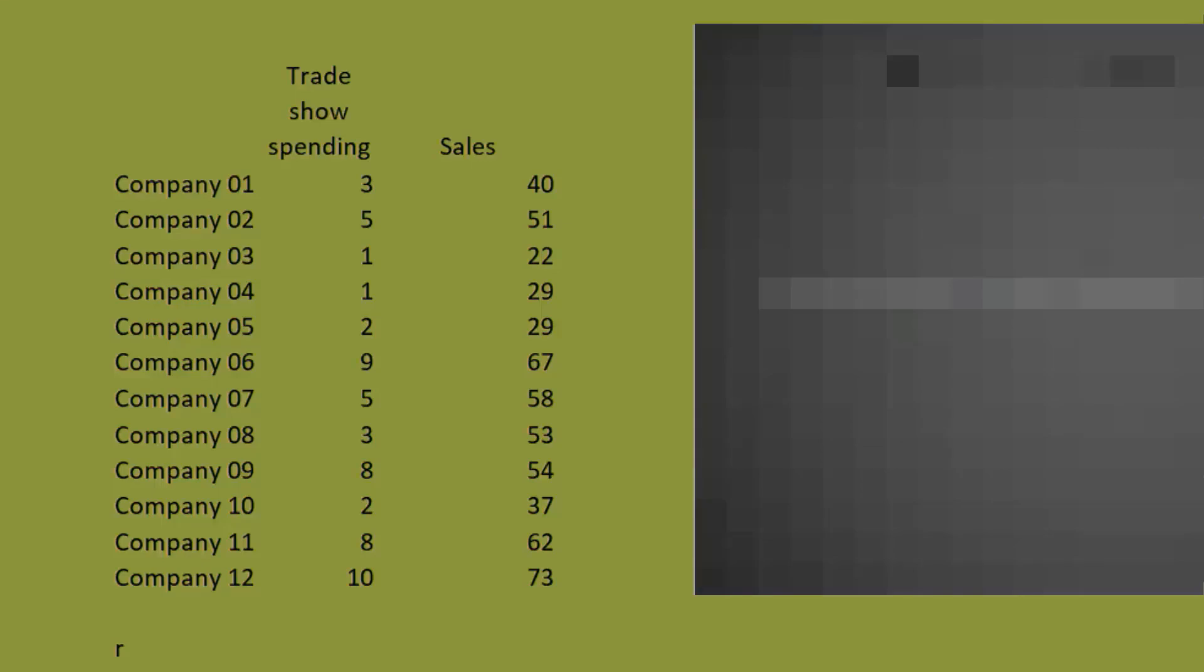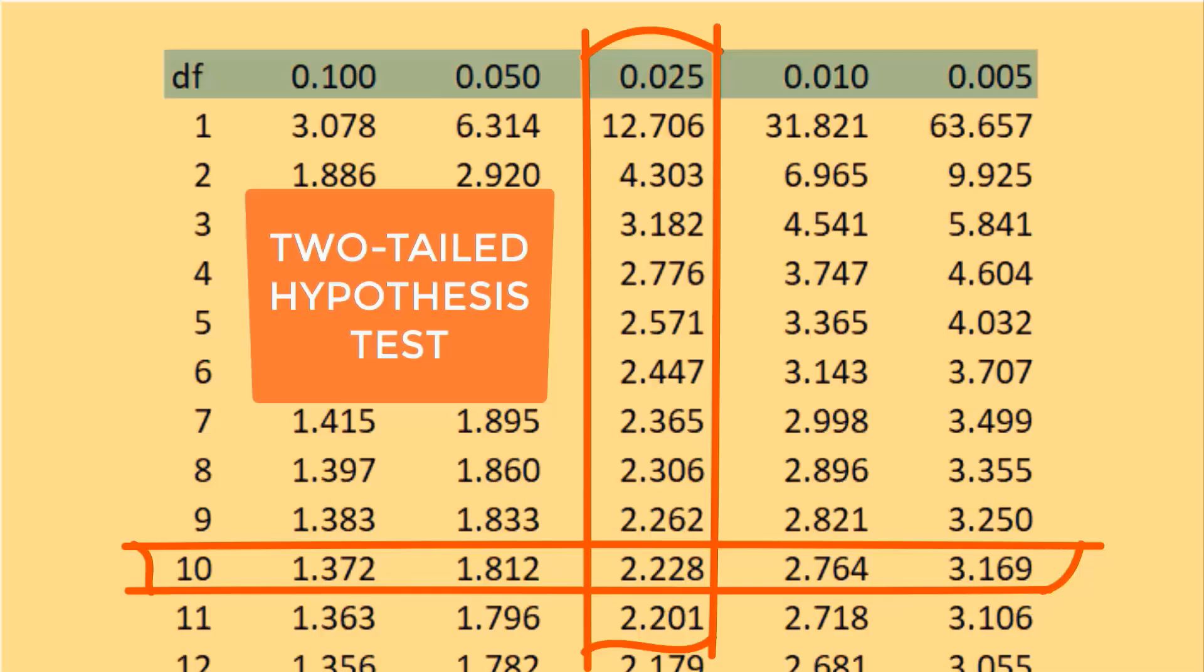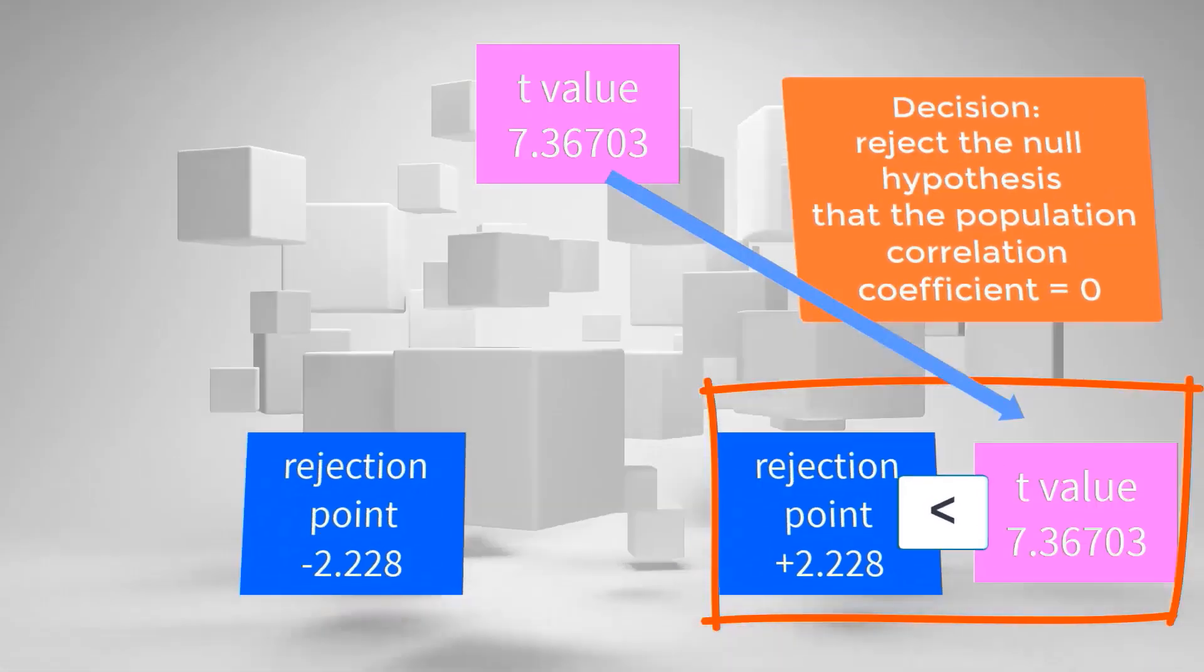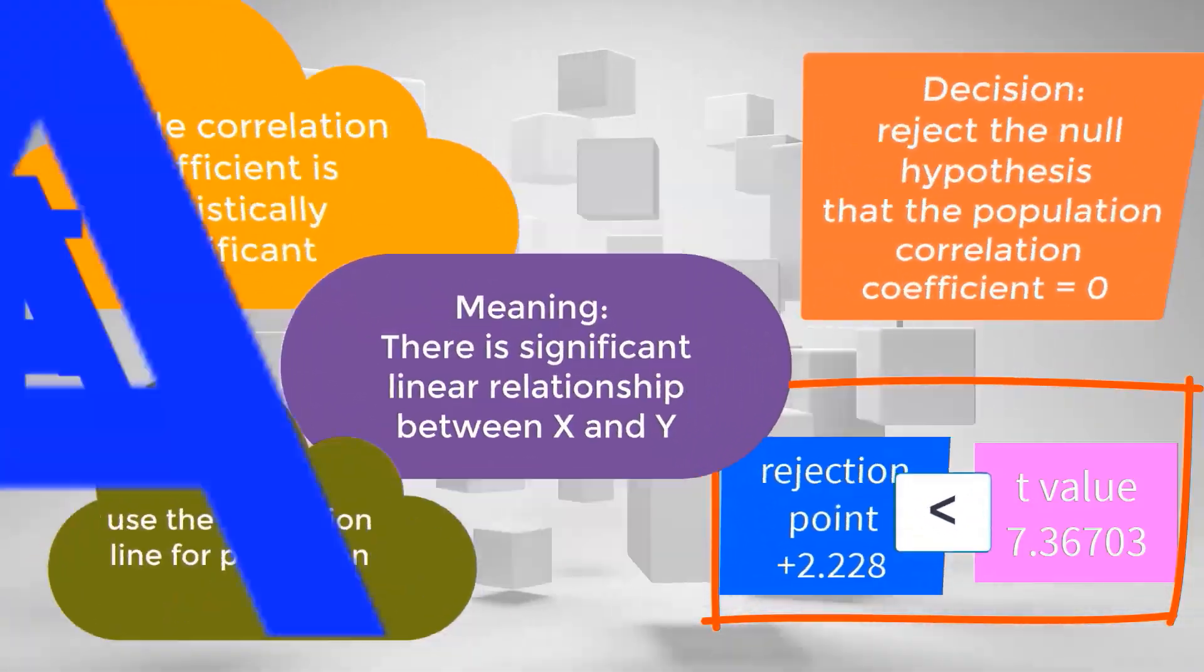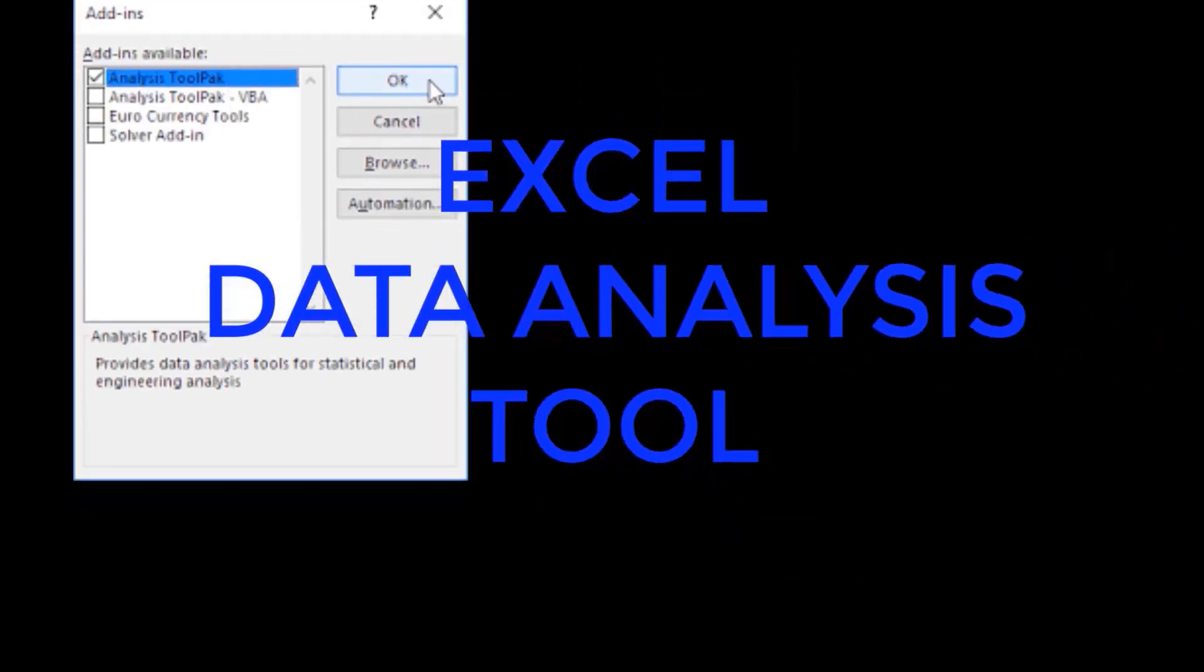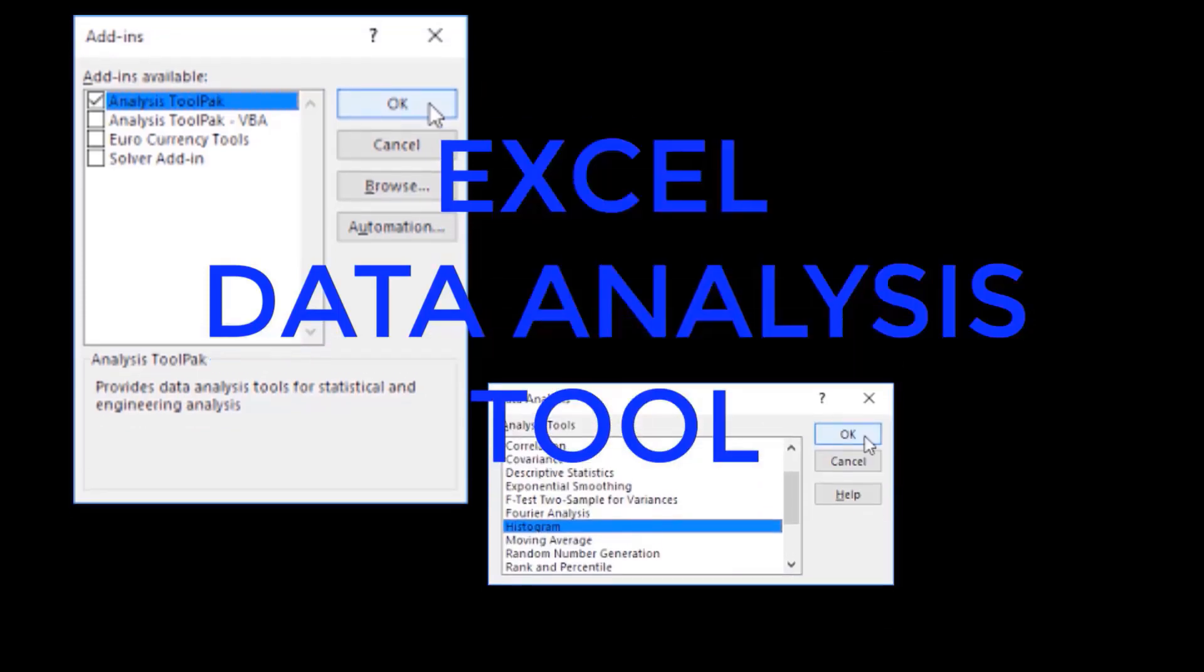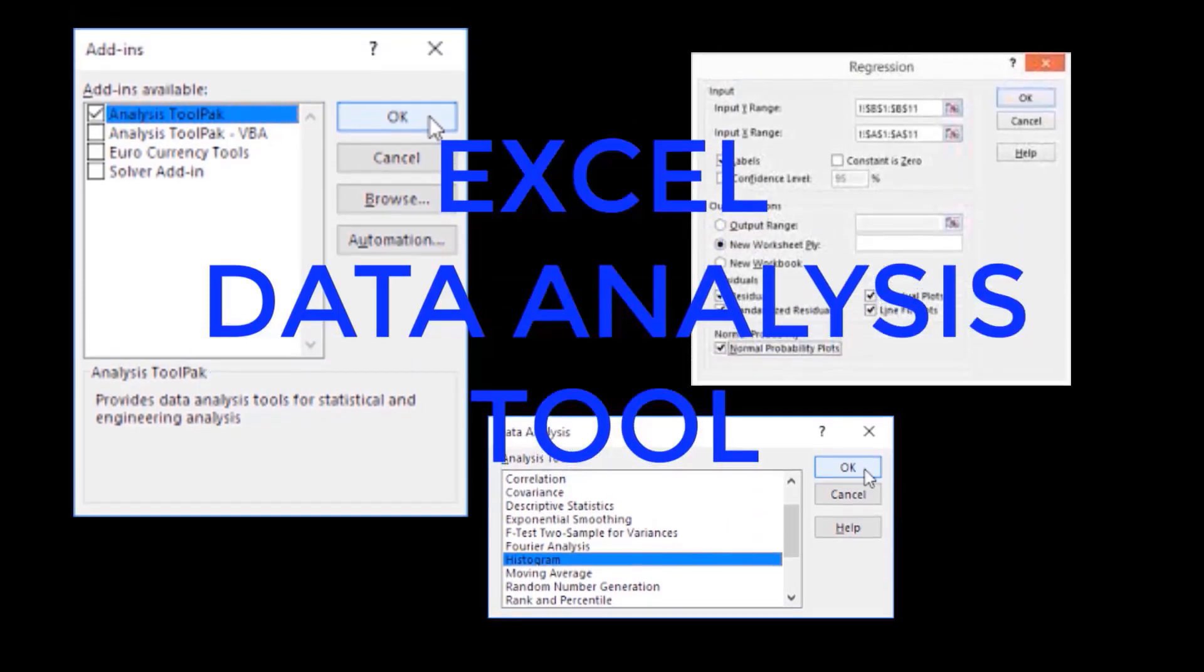The other video shows data with small sample size that results in rejecting the null hypothesis when doing the test of significance of correlation coefficient. Now let's examine another example of data in small sample size, but this time using Excel data analysis tool.